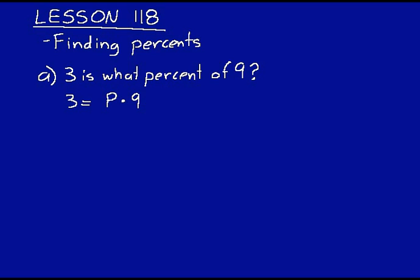Now we have a problem like a missing value problem and we know what to do here. We just divide that answer, the product, by that one factor that's known. And so we have 3 over 9.